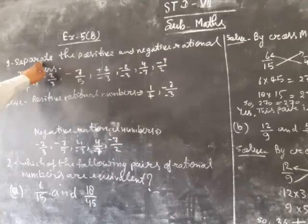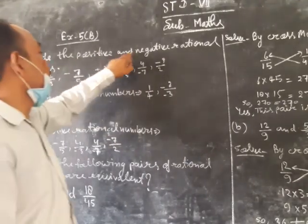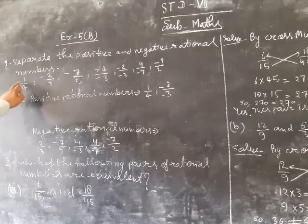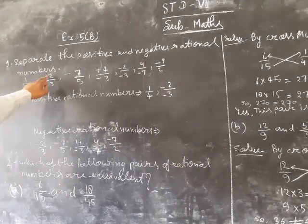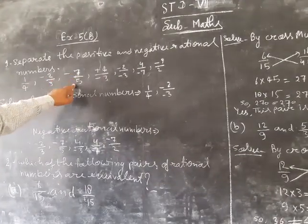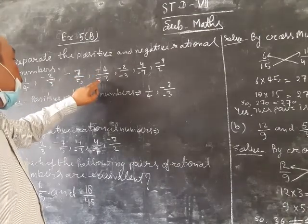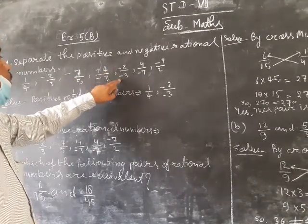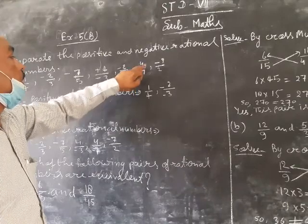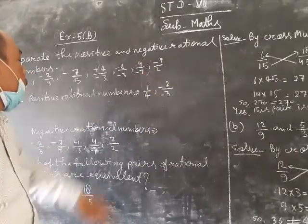Question number 1, separate the positive and negative rational numbers. Here you have 1 upon 4, minus 2 upon 3, minus 1 upon 5, plus 4 upon minus 3, minus 2 upon minus 3, 4 upon minus 1, minus 1 upon 2.